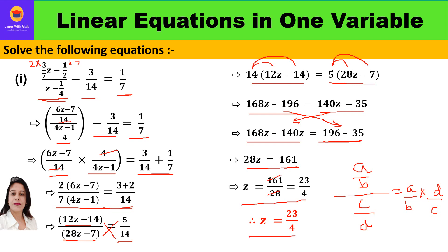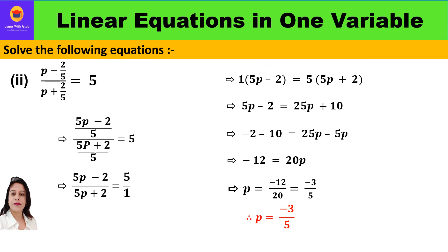Now let us take the second question: (p minus 2/5) upon (p plus 2/5) is equal to 5. Since 5 is the LCM in both numerator and denominator, we get (5p minus 2)/5 upon (5p plus 2)/5 equal to 5.